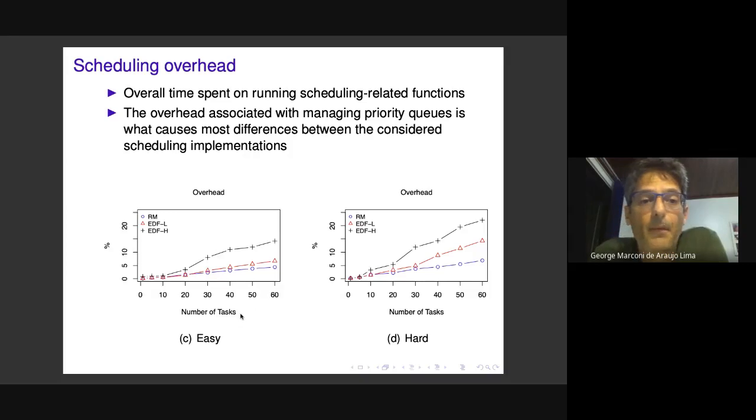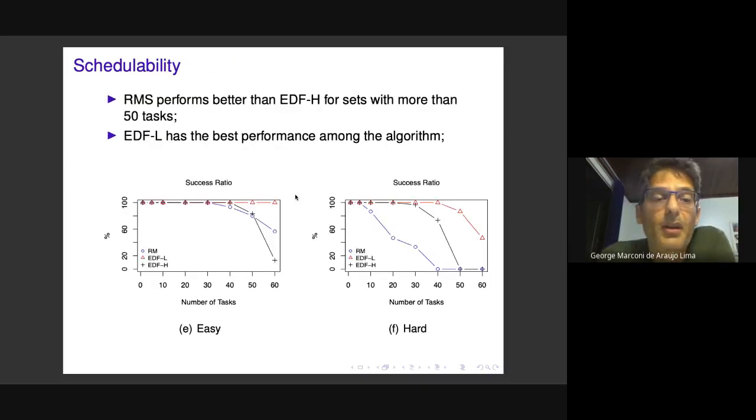As expected, the lowest overhead is rate monotonic scheduling because the task queue is much simpler.